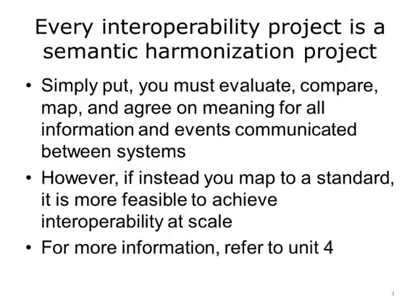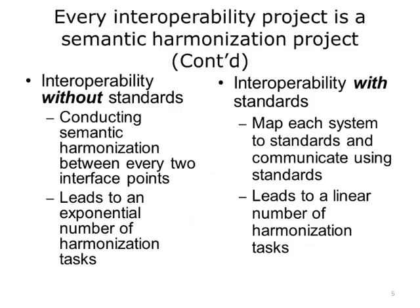Every interoperability project is a semantic harmonization project. Simply put, you must evaluate, compare, map, and agree on meaning for all information and events communicated between systems. However, if instead you map to a standard, it is more feasible to achieve interoperability at scale. Interoperability without standards means you have to conduct semantic harmonization between every two interface points, leading to an exponential number of harmonization tasks. But with standards, you map each system to the standard and communication uses that standard, leading to a linear number of harmonization tasks. At scale, it is only growing linearly.